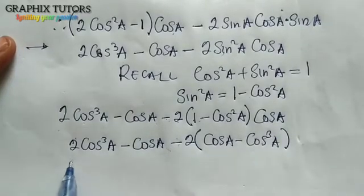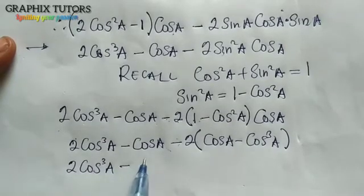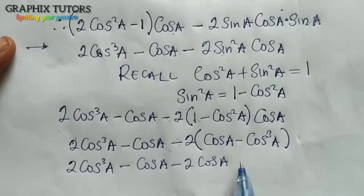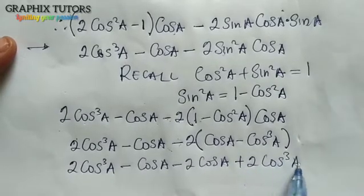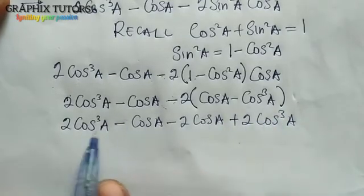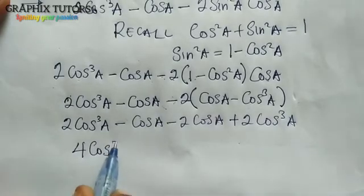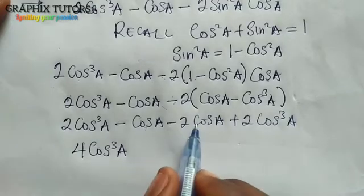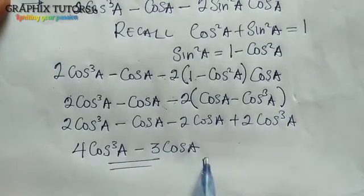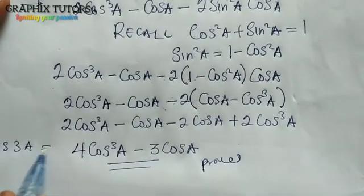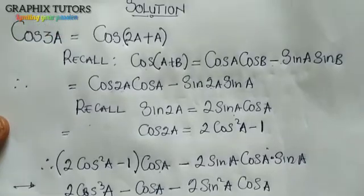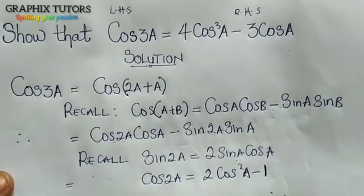So if I collect terms: 2cos³a plus 2cos³a gives 4cos³a, and minus cos a minus 2cos a gives minus 3cos a. So it is proved. It means that cos 3a is equal to 4cos³a minus 3cos a, which is exactly what they told us to prove.